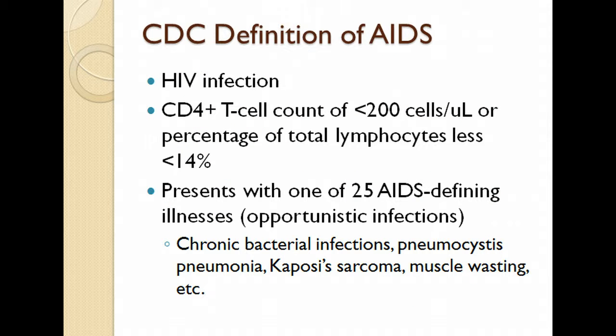So what is AIDS? First of all, the person has to have the HIV virus. They have to have their lymphocyte count — a specific type of T cells called CD4 lymphocytes — at a very low level: less than 200 cells per microliter, or less than 14% of total lymphocytes. And then they also have to have other AIDS-defining illnesses, which tend to be opportunistic infections.